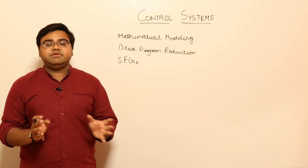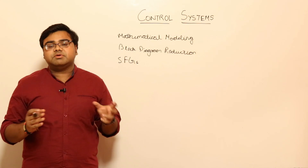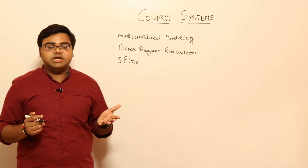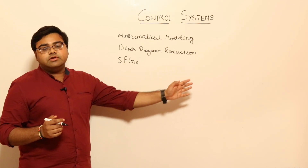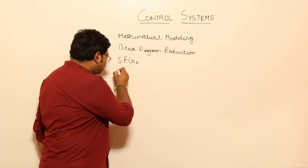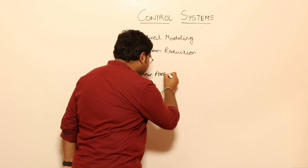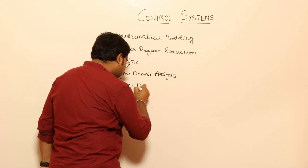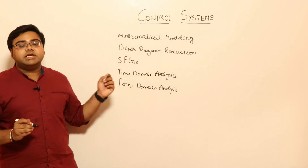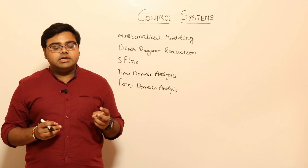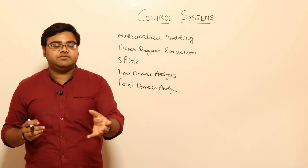Once we have a mathematical model — a transfer function of some sort — we perform two types of analysis: time domain analysis and frequency domain analysis. In time domain analysis, we study standard first order and second order systems and how they respond to different types of test inputs when applied to those standard systems.